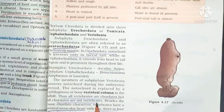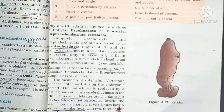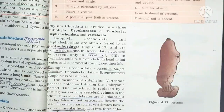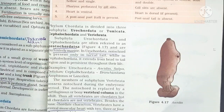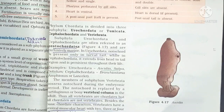Besides basic chordate characters, vertebrates have a ventral muscular heart with two, three, or four chambers; kidneys for excretion and osmoregulation; and paired appendages which may be fins or limbs.